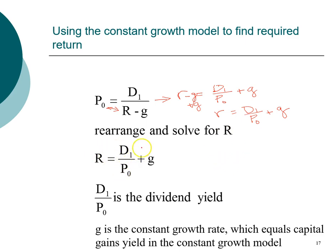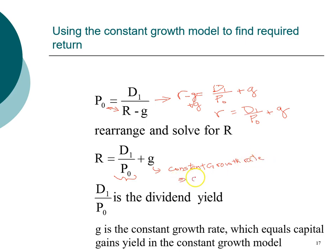We now have two terms. The first term — dividend in year one divided by price in year zero — is the dividend yield, similar to the current yield in bond valuation. This is a recurring return; as long as you hold the stock, you earn the dividend yield. The second term is the constant growth rate, which in the constant growth model is actually equal to the capital gains yield — how much the price of the stock increases. So there are two components to the return: an income component and a capital gains component.